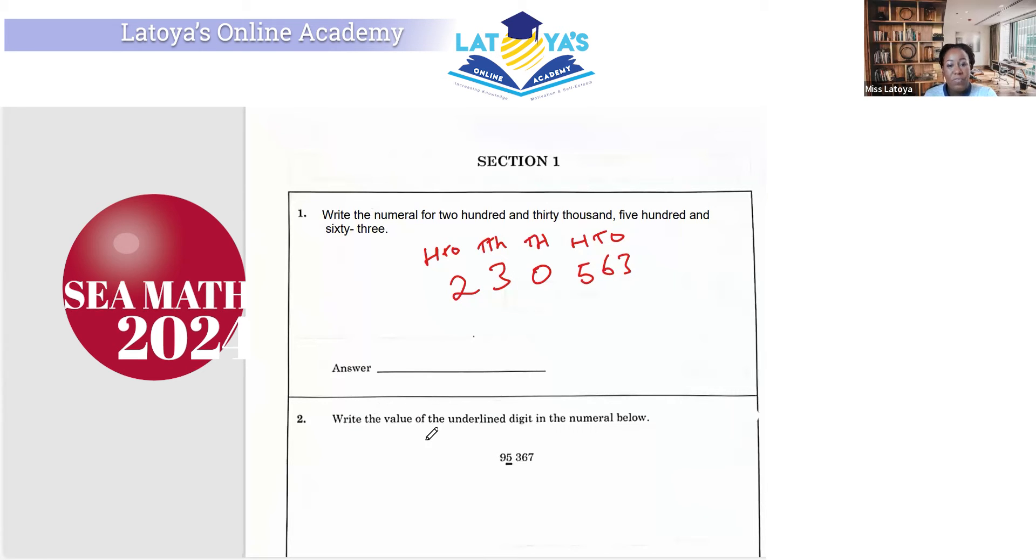Question two says to write the value, not place value. They want the value of the underlined digit. Again, you can write your place values here. This is ones, this is tens, this is hundreds, this is thousands, and this is tens of thousands. So the value of this five is going to be 5,000. If the question asks you for place value, then you would have written thousands.